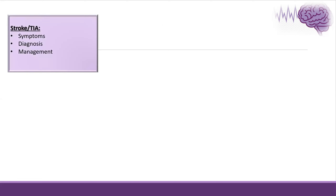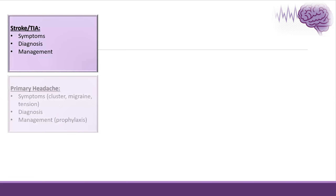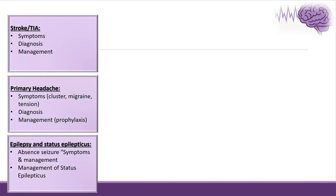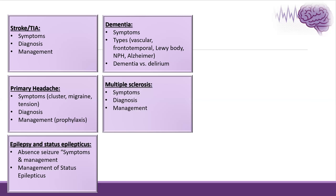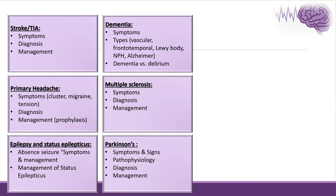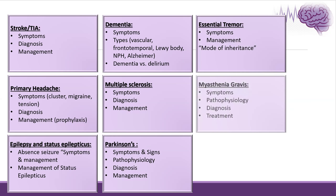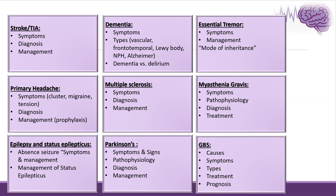In my talk, I'm going to cover the following outlines: stroke and transient ischemic attack, primary headaches, epilepsy and status epilepticus, the difference between dementia and delirium, multiple sclerosis criteria of diagnosis and management. We will talk briefly about Parkinson's disease, essential tremor, and finally about myasthenia gravis and Guillain-Barré syndrome.